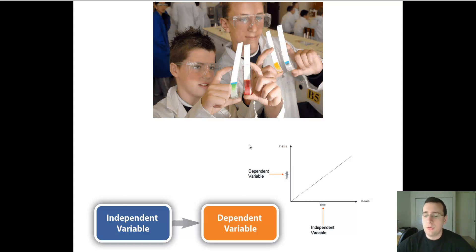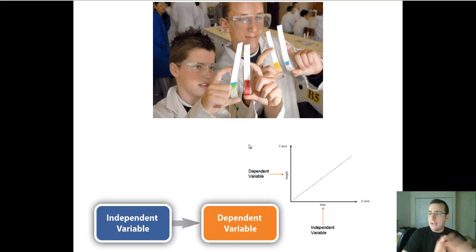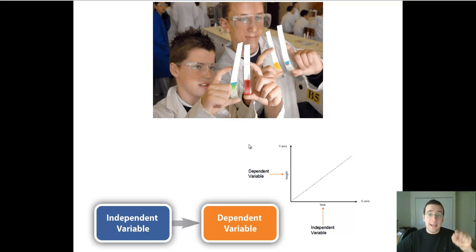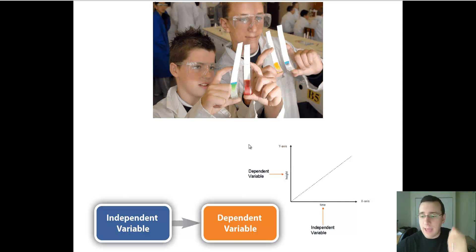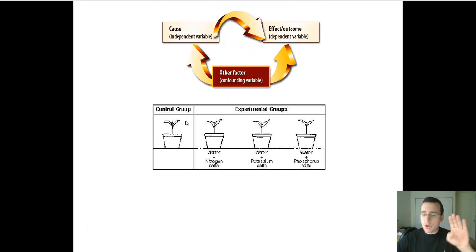This results in what we call empirical data — data where you can conclude, unlike correlational data where you could only say A is related to B. With empirical data from experiments, you can say that A causes B. That's why scientists want to establish controlled experiments, to make sure that relationship exists between the two variables.